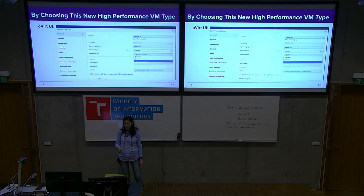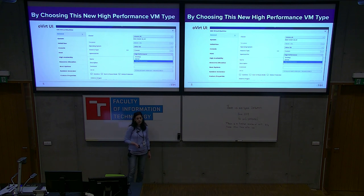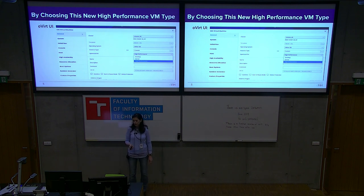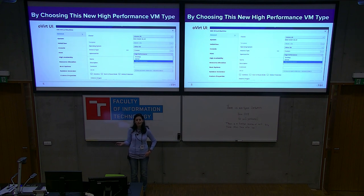As you can see, this is the oVirt UI dialogue for creating or editing a VM, and there is now a third value called High Performance. You set it, and the VM is high performance. Very easy.